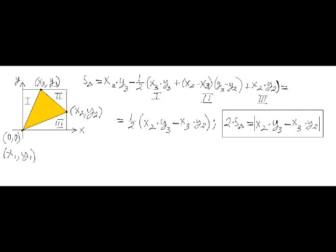After simplification, we get this very simple and symmetric formula: one-half of x2 times y3 minus x3 times y2.